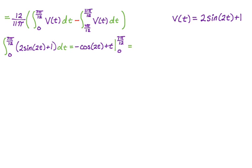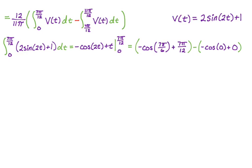Plugging in 7π/12: that's negative cosine(7π/6) plus 7π/12. Minus the quantity plugging in 0: negative cosine(0) plus 0. Cosine(7π/6) is -√3/2, so negative times -√3/2 gives √3/2, plus 7π/12. Cosine(0) is 1, so minus negative 1 is plus 1. The first integral evaluates to √3/2 + 7π/12 + 1. There's some unit circle values and u-substitution here — not an easy problem, but very straightforward, just a bit annoying.